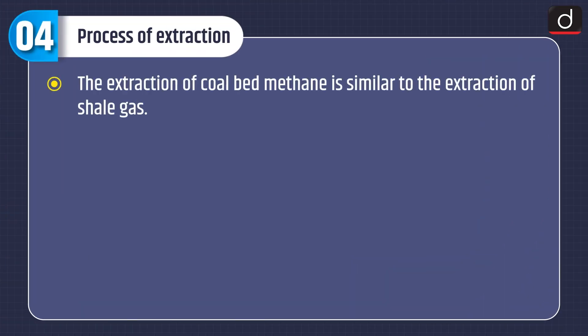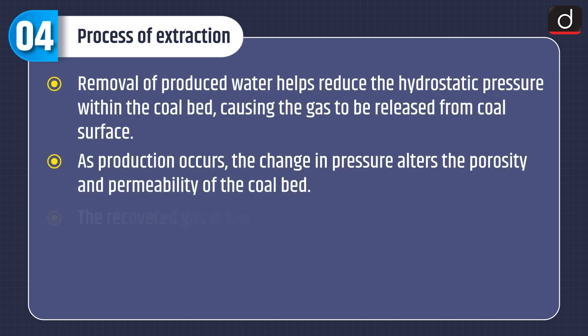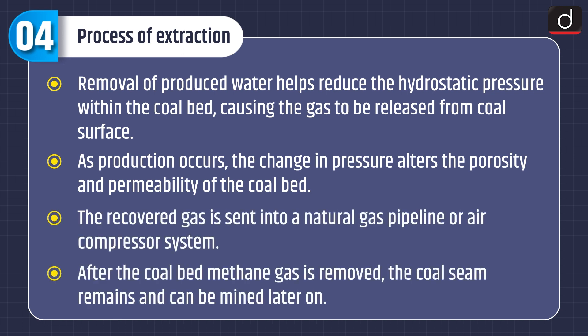Now moving on to the process of extraction. The extraction of coal bed methane is similar to the extraction of shale gas. A steel-cased hole is drilled into the coal seam and the underground produced water is pumped out through tubing. These wells are often drilled horizontally to gain access to difficult-to-reach coal seams. Removal of produced water helps reduce the hydrostatic pressure within the coal bed, causing the gas to be released from the coal surface. As production occurs, the change in pressure alters the porosity and permeability of the coal bed. The recovered gas is sent into a natural gas pipeline or air compressor system.